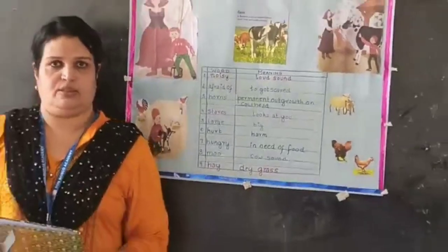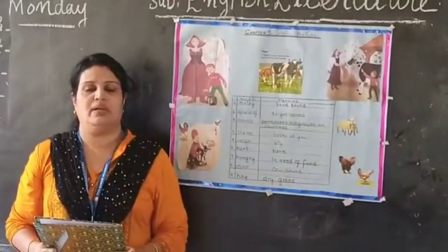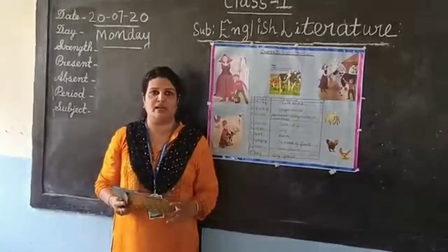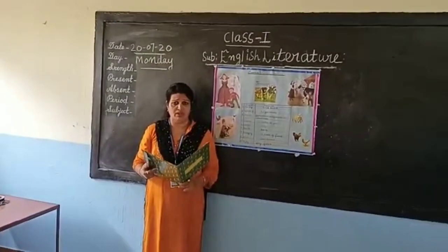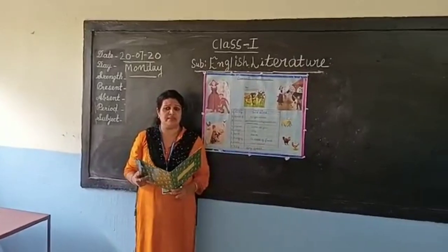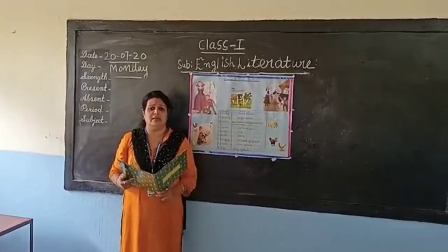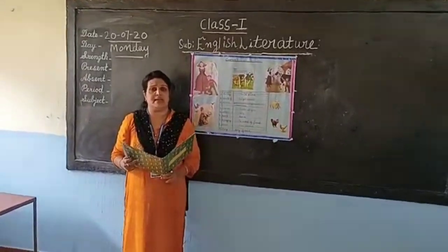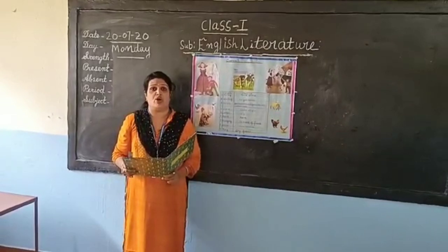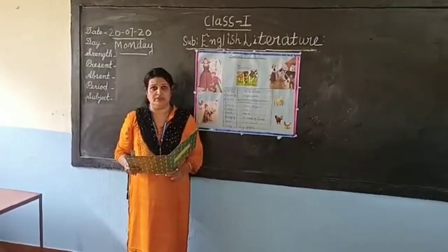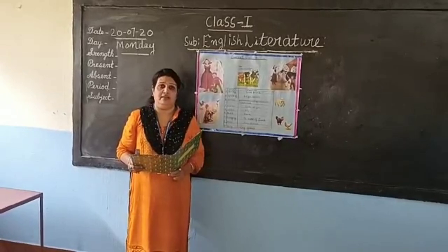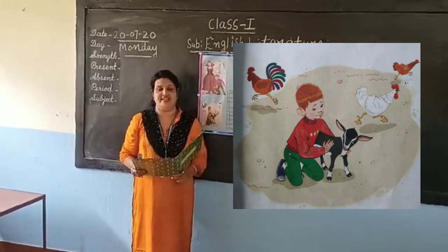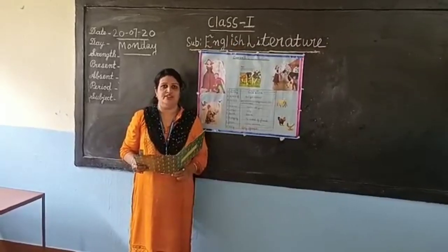So students, this is clear. Now I am going to explain the story of this lesson, chapter 5, Daisy the Cow. Jim is a boy. He likes all the animals on the farm. He likes the little black goat Billy, the noisy hens, and the gentle sheep.